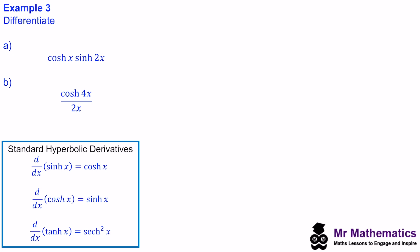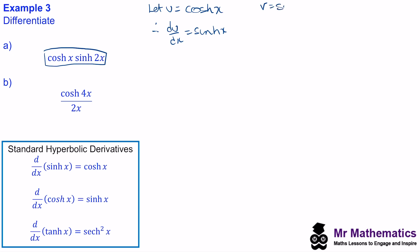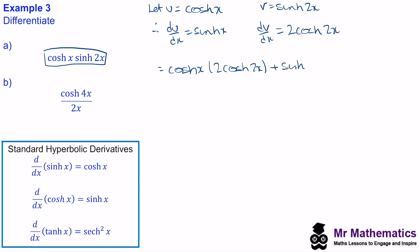In question three we apply the product rule to differentiate cosh(x) multiplied by sinh(2x). Let u equal cosh(x), so du/dx equals sinh(x). Let v equal sinh(2x), so dv/dx equals 2 cosh(2x). The derivative is u times dv plus v times du: cosh(x) times 2 cosh(2x) plus sinh(2x) times sinh(x). So the final derivative is 2 cosh(x) cosh(2x) plus sinh(x) sinh(2x).